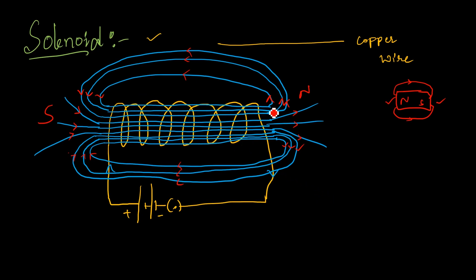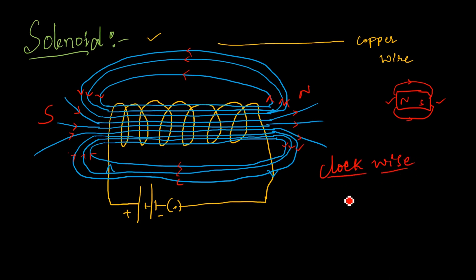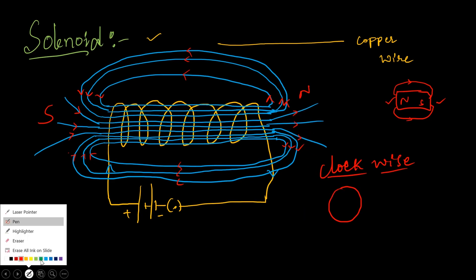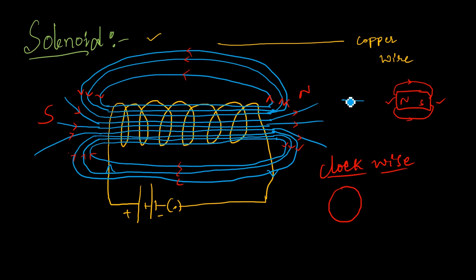By these we can identify the magnetic field direction. How can we identify which pole is north or south? The first method is using a compass — when the compass needle deflects moving away, it is the north pole; when it is attracting towards this pole, that is called the south pole. By using the clock face rule also we can identify the poles. If the current is moving in an anti-clockwise direction when you look at that face, that is the north pole. If the current is moving in a clockwise direction, that will be considered the south pole.